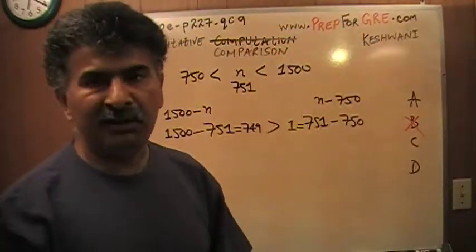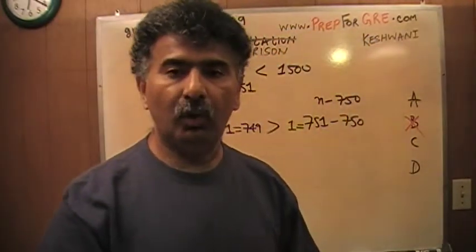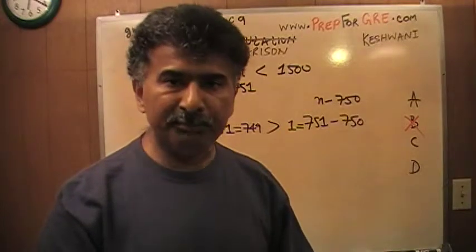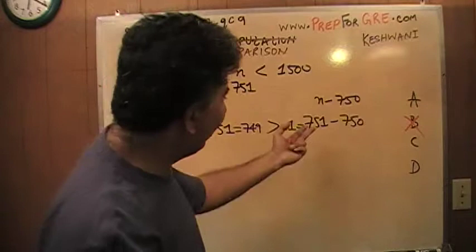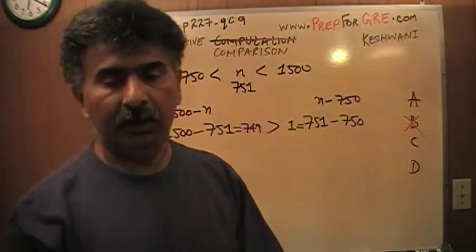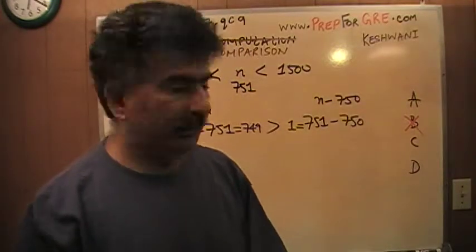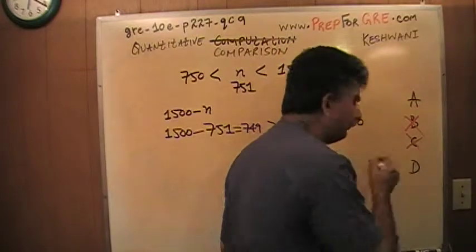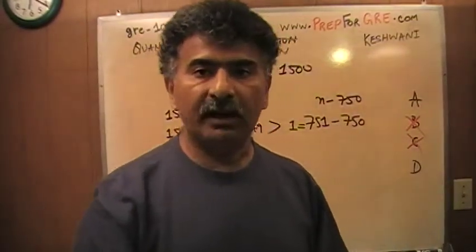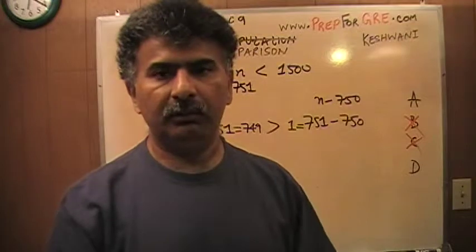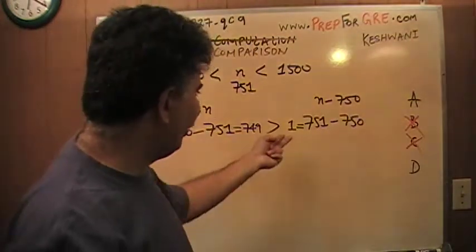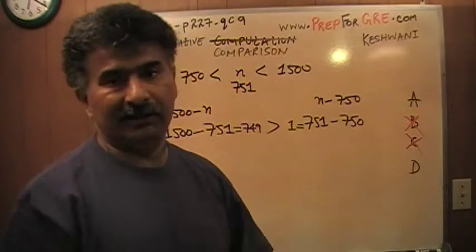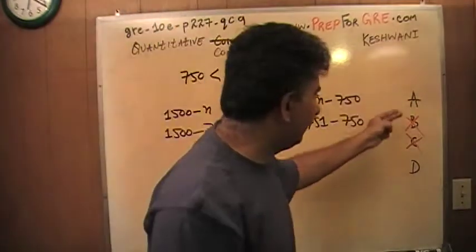Because B would have meant that the quantity in column B is always greater. The quantity in column B cannot possibly be always greater because I have found one instance when it's not. I also now know at this point that the answer cannot be C. Because C would have meant that the two quantities are always equal. Well, they cannot possibly be always equal to each other because I have found one instance when they are not. The answer has to be either A or D.